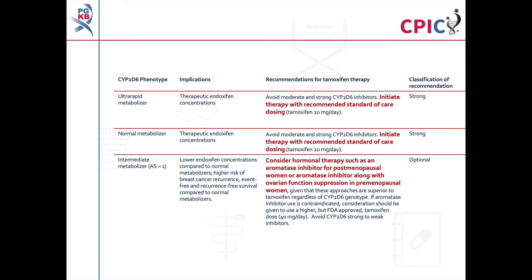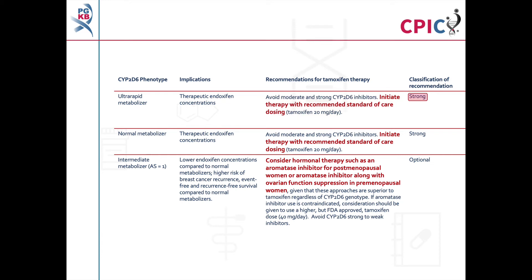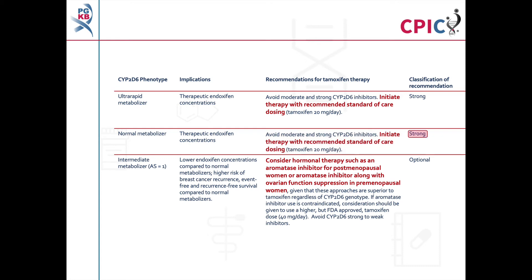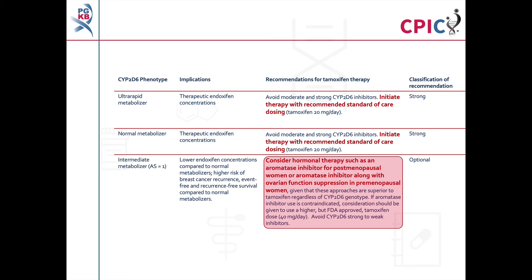These are the CYP2D6 dosing recommendations for tamoxifen. Patients with a CYP2D6 ultra-rapid metabolizer phenotype will have plasma concentrations of endoxifen at therapeutic levels. These patients can begin tamoxifen therapy with recommended standard of care dosing; this is a strong recommendation. Patients with a CYP2D6 intermediate metabolizer phenotype with an activity score of 1 will have reduced plasma concentrations of endoxifen and are at a higher risk of breast cancer recurrence. An alternative hormonal therapy can be considered for these patients. If aromatase inhibitor use is contraindicated, a higher dose of tamoxifen can be considered. This is an optional recommendation.